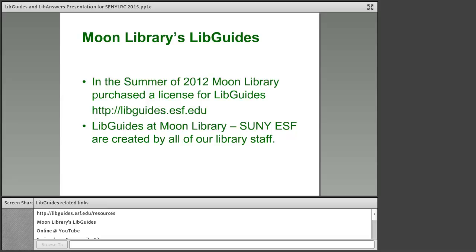In the summer of 2012 we purchased a license for LibGuides, and all of our staff here at Moon Library can create LibGuides. We're a very small library — the main library at our campus only has nine staff members: three clerks, three librarians, a secretary, a systems person, and a library director. We empower everyone to take ownership. If they have an idea for a LibGuide, they mentor up with someone else who's already been doing it and create that LibGuide. We also allow our interns to do LibGuides, but we pair them up with someone on staff who has already been doing them.